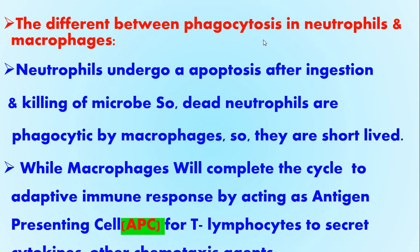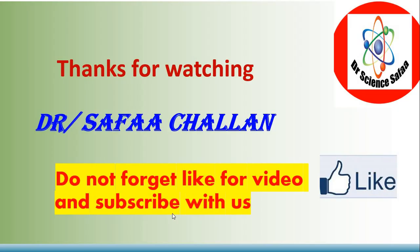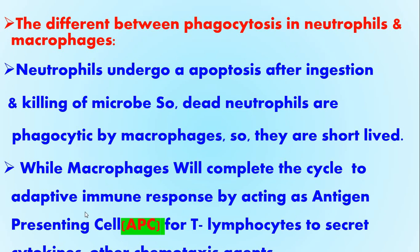The difference between phagocytosis in neutrophils and macrophages: neutrophils undergo apoptosis after ingestion and killing of microbes, and dead neutrophils are phagocytosed by macrophages, so they are short-lived. While macrophages complete the cycle to the adaptive immune system by acting as antigen-presenting cells for T lymphocytes, secreting cytokines, interleukins, and chemotactic factors to complete the immune cycle.